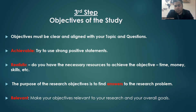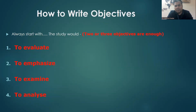Your objectives must be relevant to your study — make them relevant to your research and your overall goals. Your objectives must also be aligned with your research questions. If you have two questions, you should have two objectives; if you have three questions, you should have three objectives.